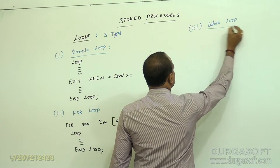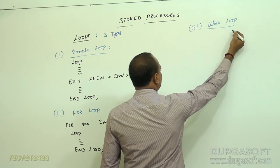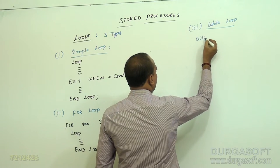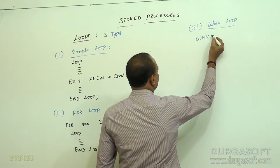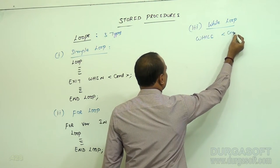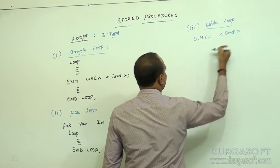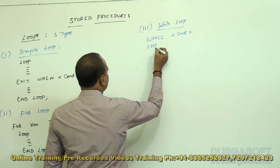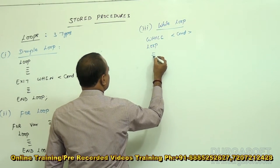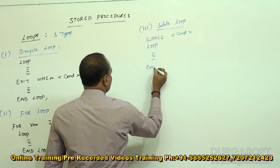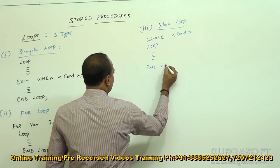The FOR loop syntax begins with LOOP, then the statements, and ends with END LOOP. The next type of loop is a WHILE loop. Its syntax is: WHILE, specify a condition, LOOP, statements, END LOOP.